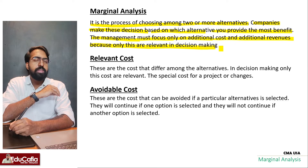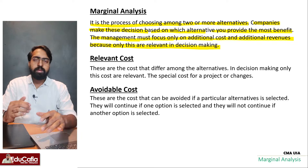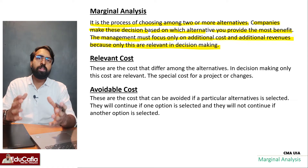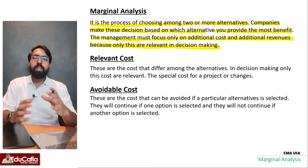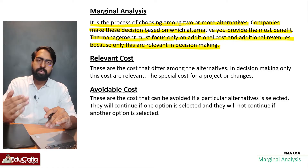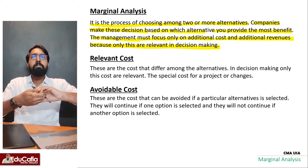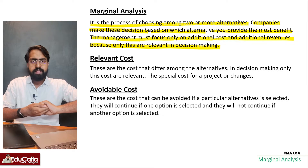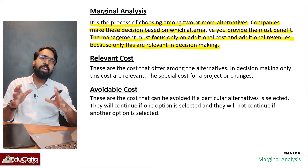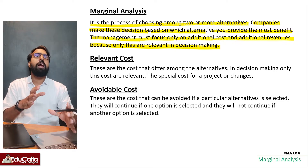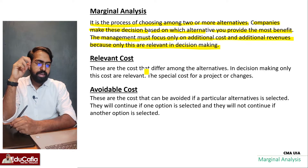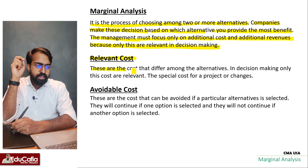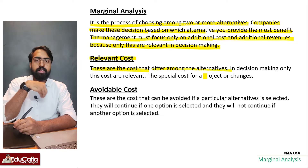Management must focus only on additional costs and additional revenues, because only these are relevant in decision making. When there are alternatives, we compare them. What is a relevant cost?